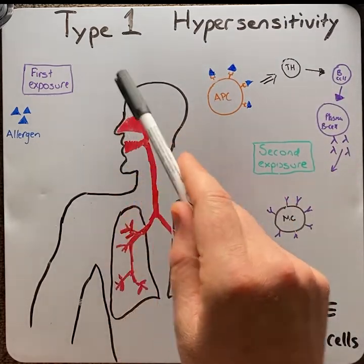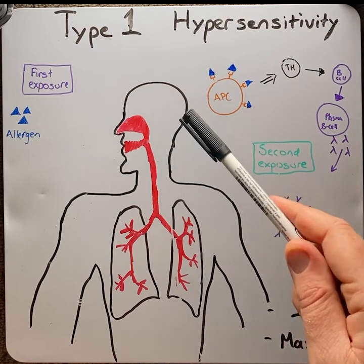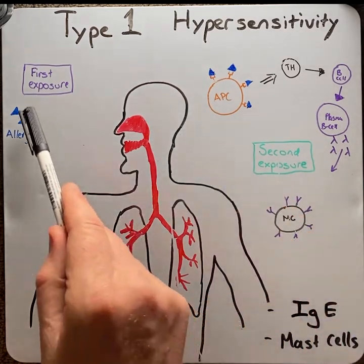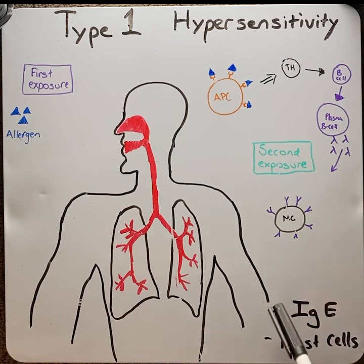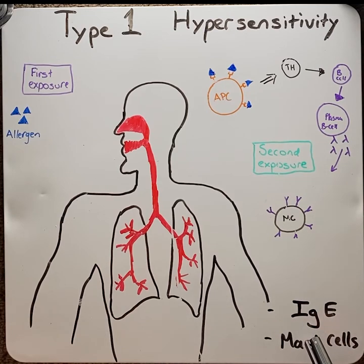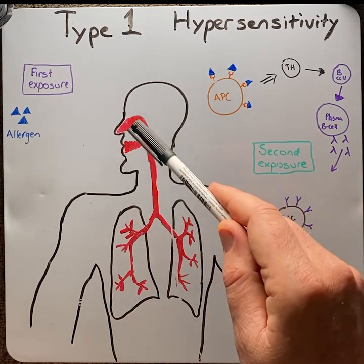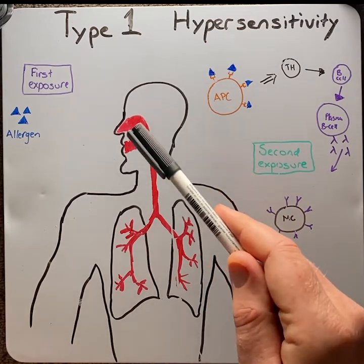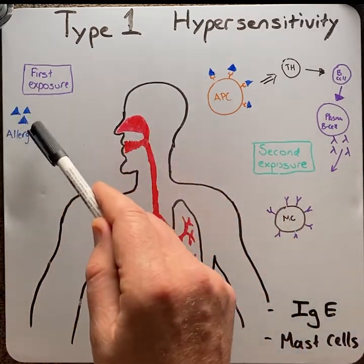Type 1 reactions are usually known as allergic reactions or atopy, and are characterized by an allergen, IgE antibodies, and mast cells. When a genetically susceptible person is exposed to a particular antigen — now we'll call it the allergen —